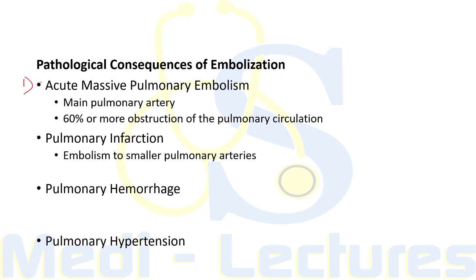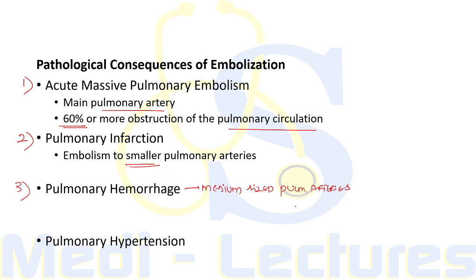The pathological consequences of embolization include: acute massive pulmonary embolism when emboli lodge in the main pulmonary artery — occurring with 60 percent or more obstruction and potentially causing sudden death; pulmonary infarction from embolism to smaller pulmonary arteries; pulmonary hemorrhage due to obstruction of medium-sized pulmonary arteries with subsequent vessel rupture; and chronic pulmonary hypertension from multiple recurrent emboli causing mechanical blockage, leading to cor pulmonale.